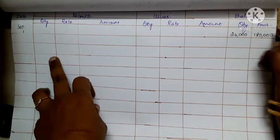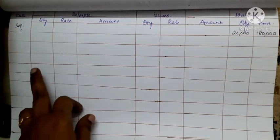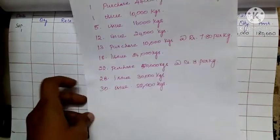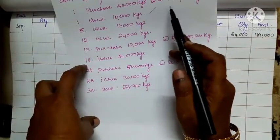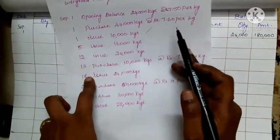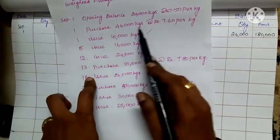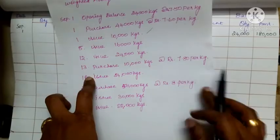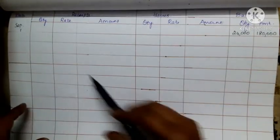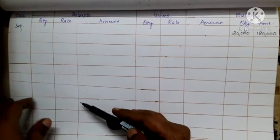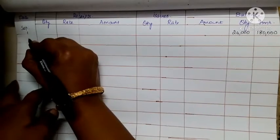Multiply 24,000 by 7.50 to get 1,80,000. Now the next entry is a purchase of 44,000 kg at 7.60 per kg, which we enter in the receipts column.